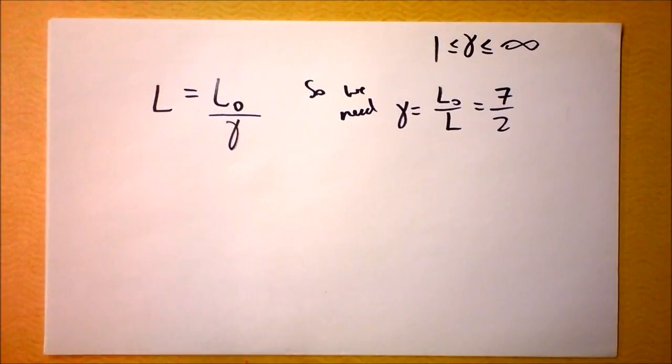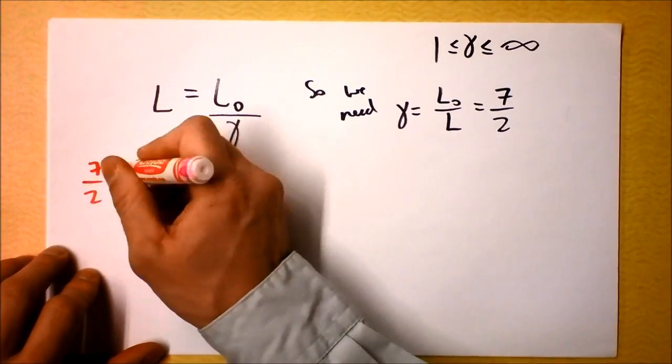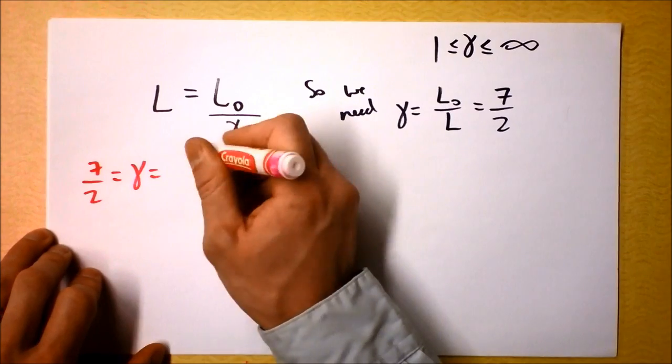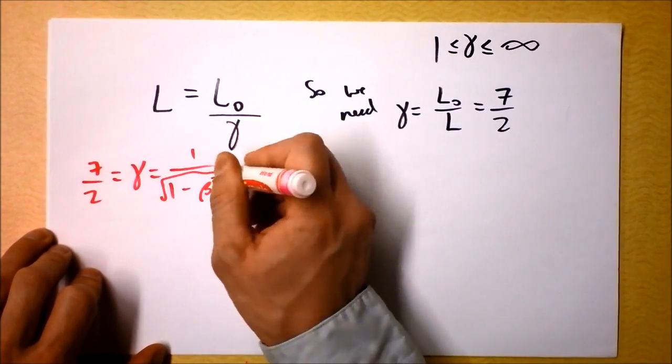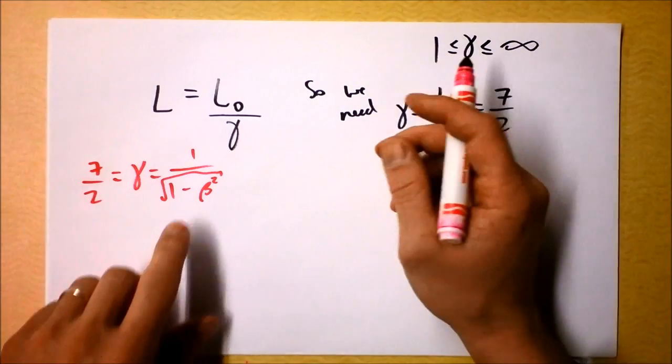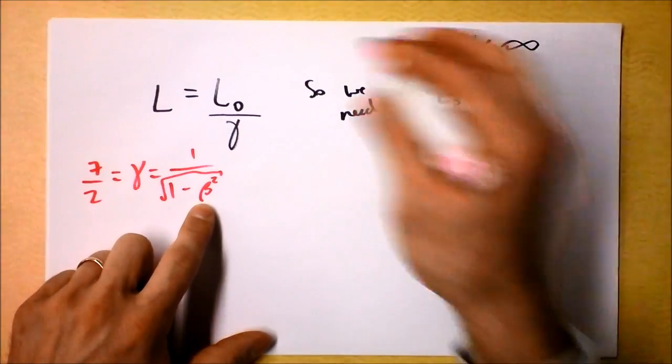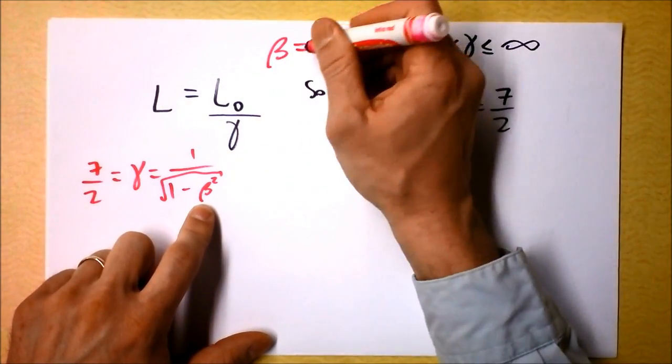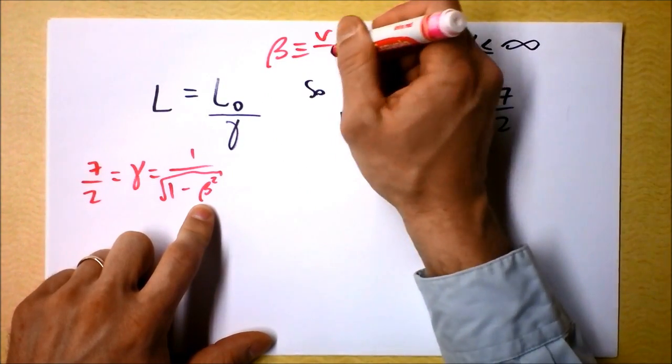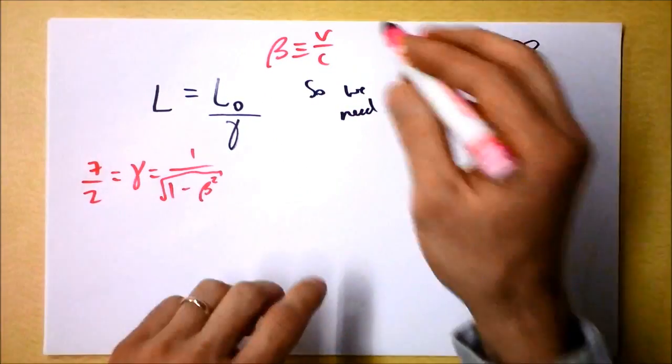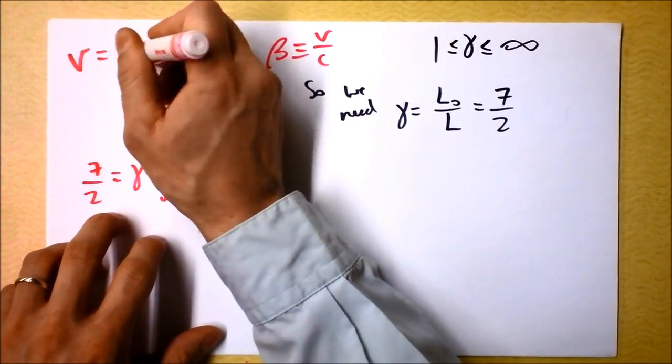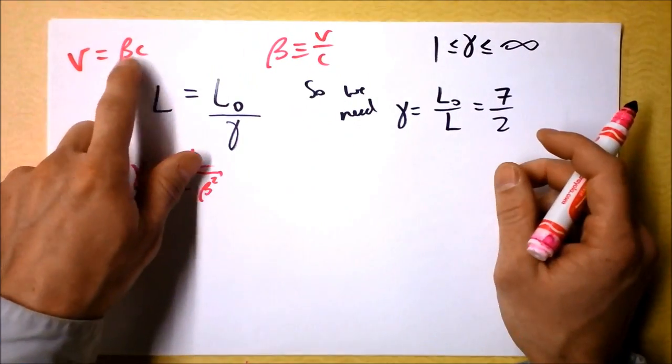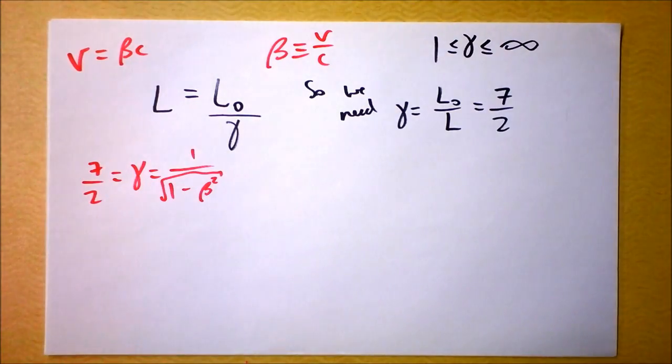We'll do a little bit of algebra and say that 7 halves is gamma. So we've got gamma, and gamma is 1 over square root of 1 minus beta squared, and it's all squared in the denominator. And I need to solve for beta. Because remember, beta is the ratio of the speed of the object to the speed of light. So if I can just present the speed as V equals beta times C, if I know beta, then I'll be able to say what fraction of the speed of light we're talking about.